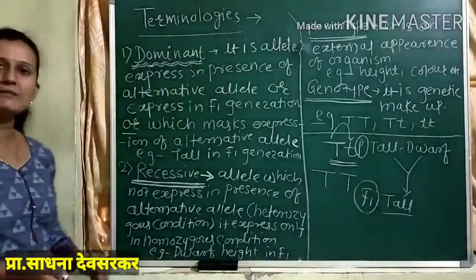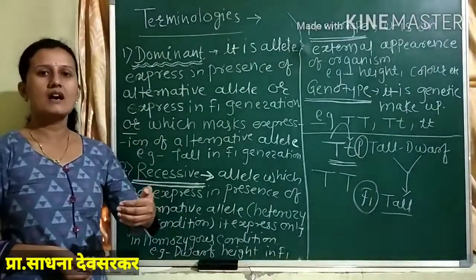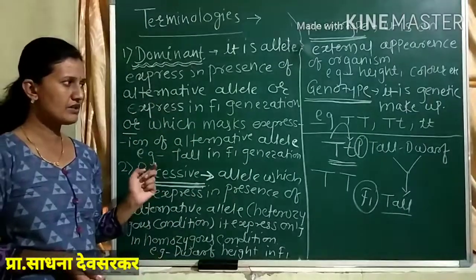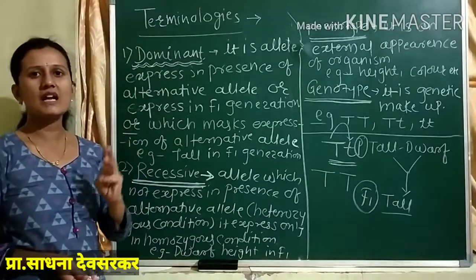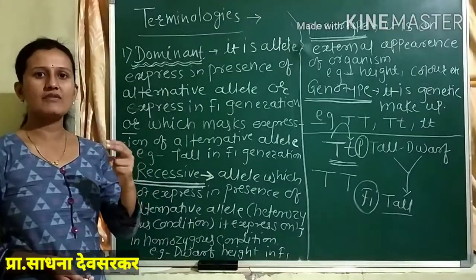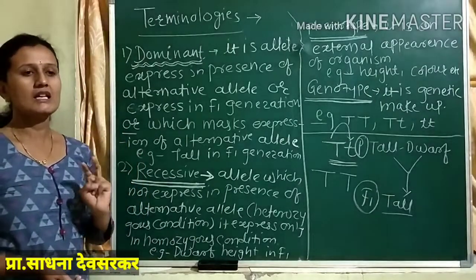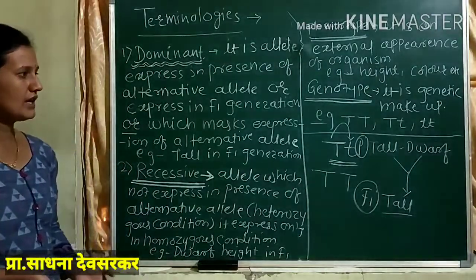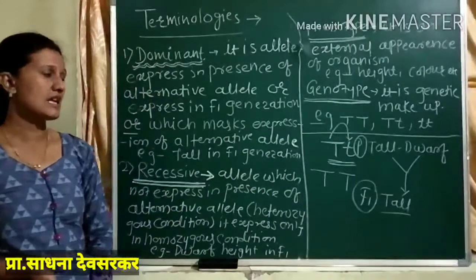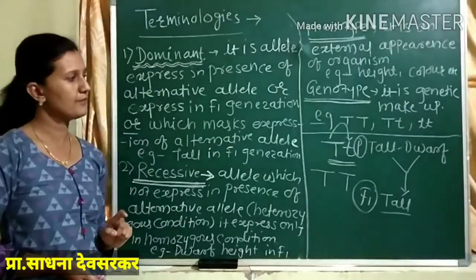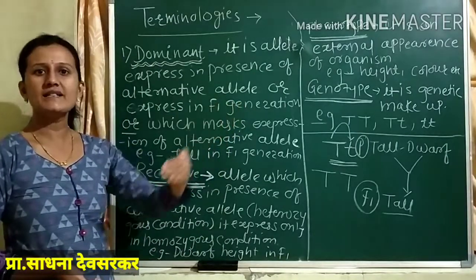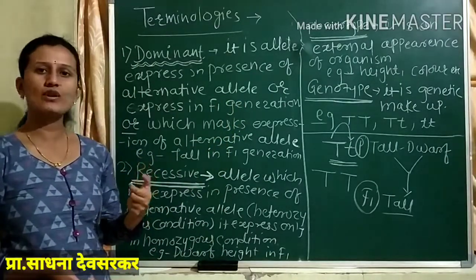The tall parent in the parent generation is pure tall. It produces its character for three or more generations — at least up to three generations. A pea plant has a lifespan of three and a half to four months, so three generations can complete in one year. The tall character is produced as a pure tall character. Similarly, the dwarf pea plant is pure for its dwarf character.